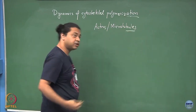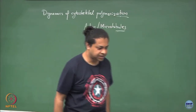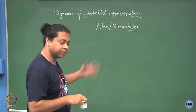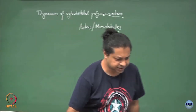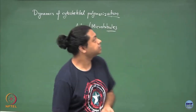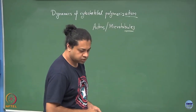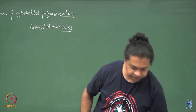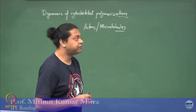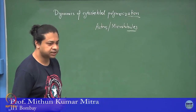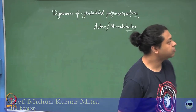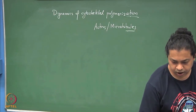We will look at models of different levels of complexity to understand polymerization and depolymerization. Before I start, I thought I will give a brief introduction once more. We have all seen actins and microtubules, but let us look in a little bit more detail at what these polymers are.